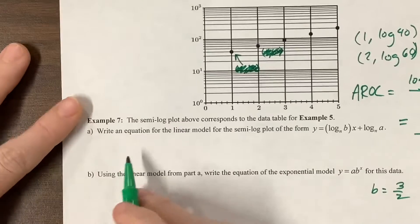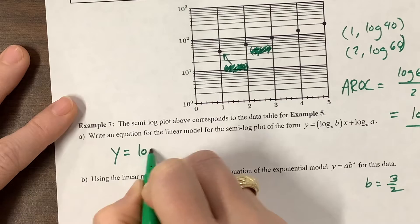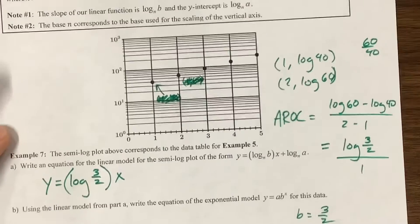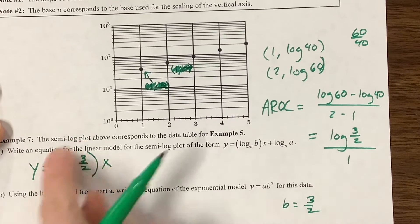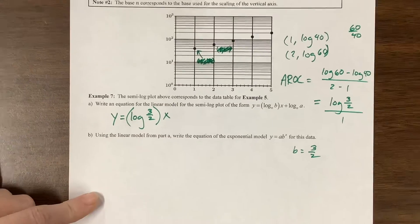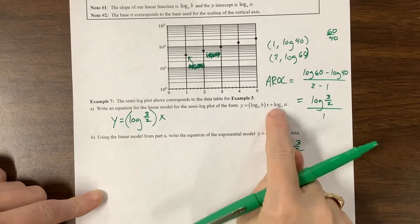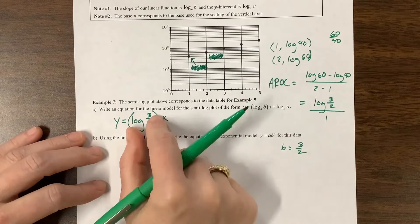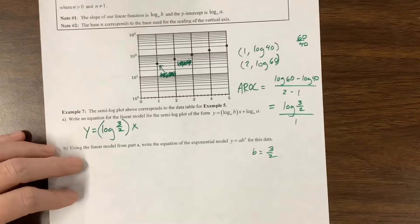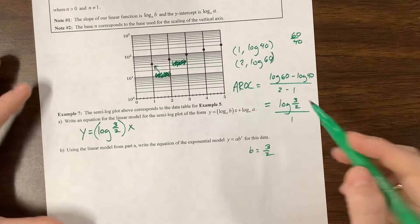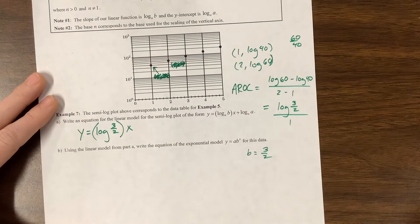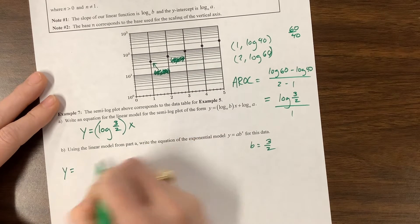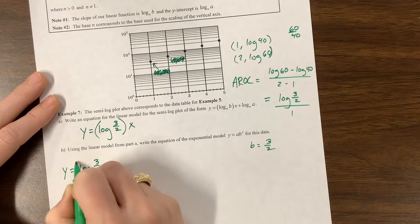Okay, so the average rate of change is this value right here, so my b value is going to be 3 halves, which will help me down here. So we just said b is equal to 3 halves. Okay, so what do I have so far? I have that y is equal to log of 3 halves times, let's use parentheses here, times x, because you'll notice that this value becomes the slope.